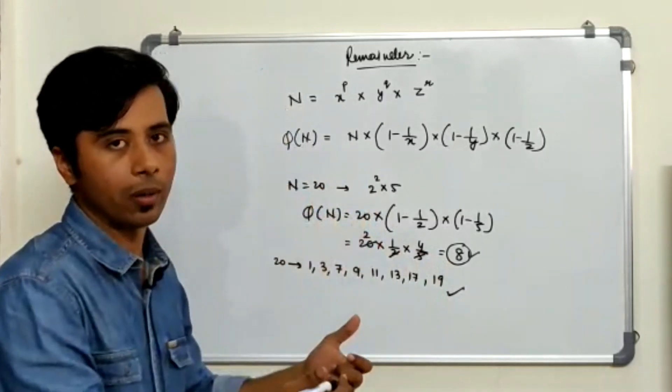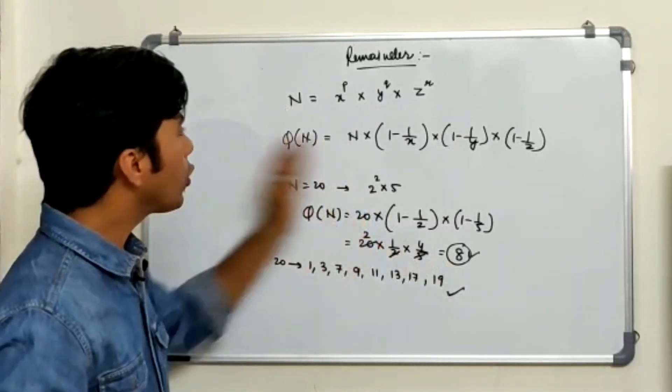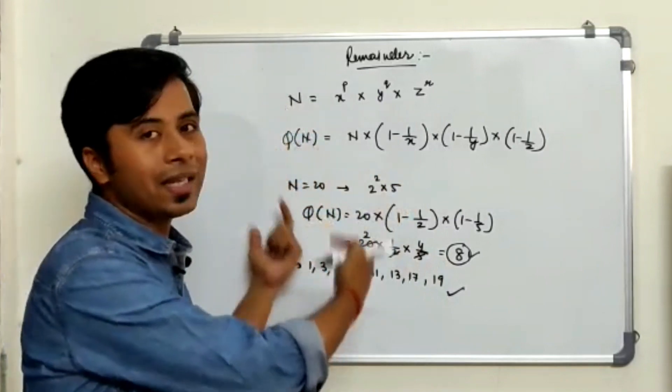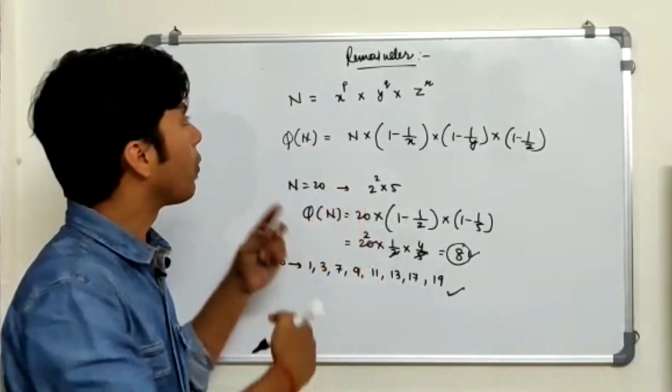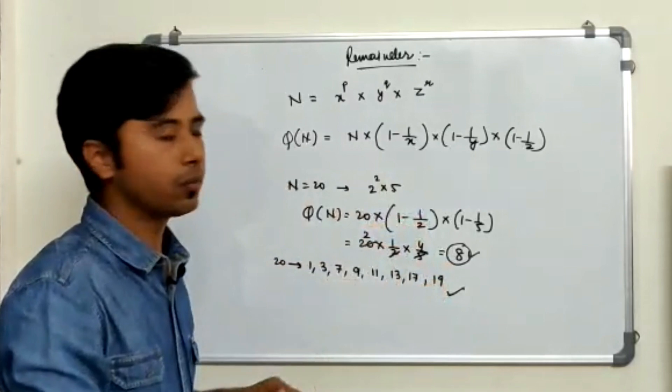So that's what totient does to a number. So now we have seen totient and we are going to apply the same in remainder when you are using Euler's theorem. Let's see.